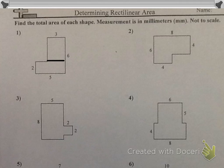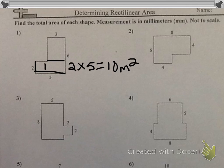Divided horizontally, I see that the bottom rectangle has a length of 2 and a width of 5. So the area of the smaller rectangle would be 2 times 5, which would equal 10 millimeters squared. So this has a value of 10.